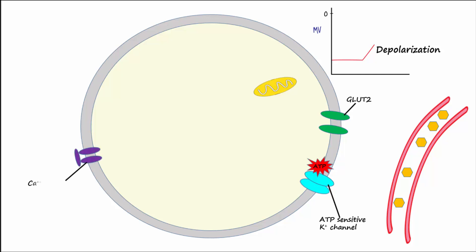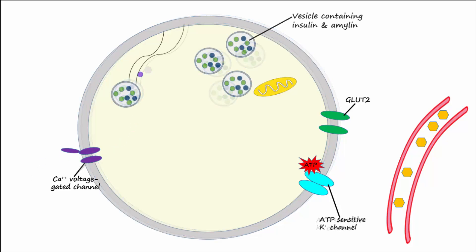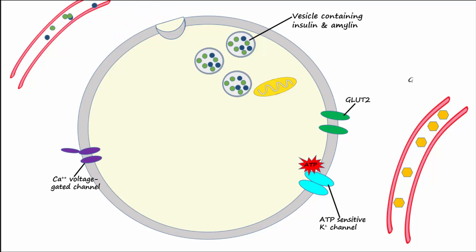Calcium enters the beta cell and causes exocytosis of pre-synthesized vesicles containing insulin and amylin, which then enter the blood. It is important to remember that this process is not an all-or-none response. The level of glucose in the blood will result in a corresponding amount of insulin and amylin release from the beta cell.